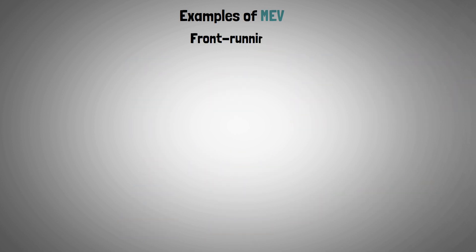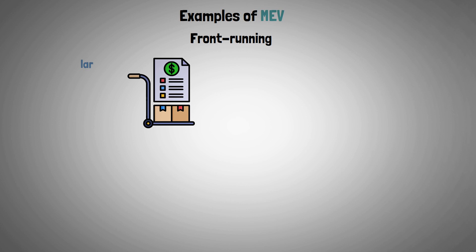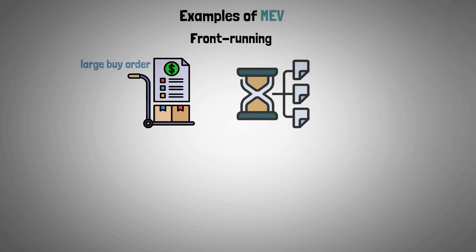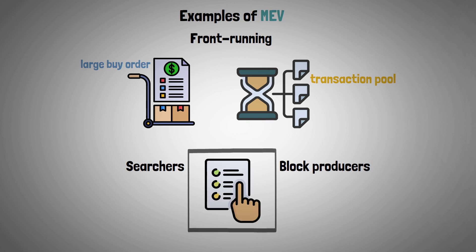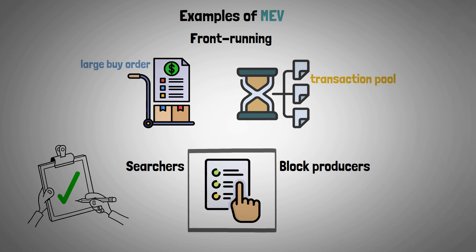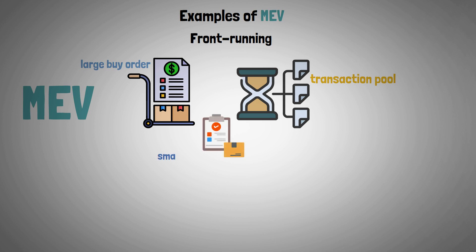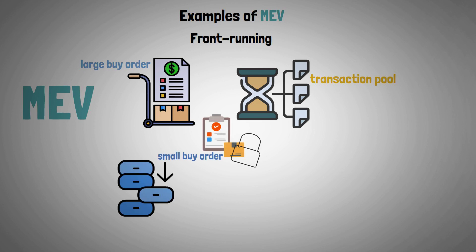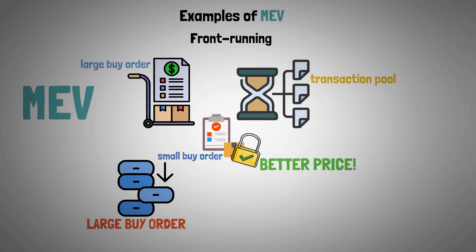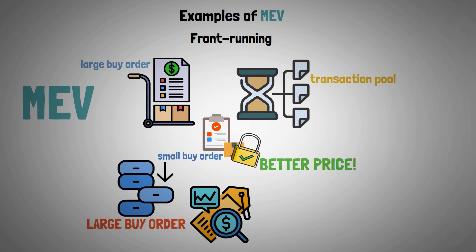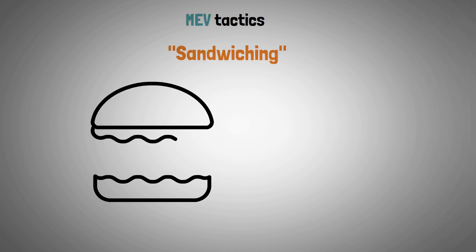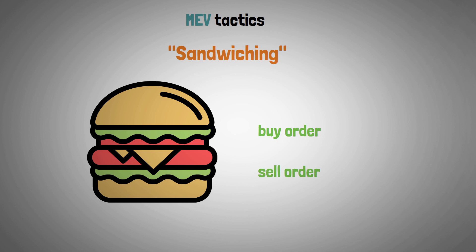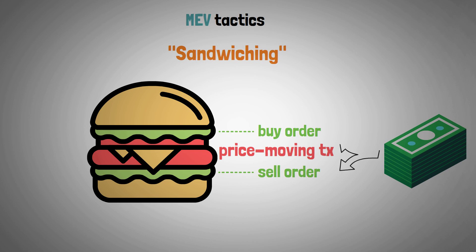Front running: let's say that there is a significant buy order still pending in the transaction pool. Searchers and block producers can order transactions in a block, meaning that front running is possible. MEV happens when a smaller buy order is inserted before the trade to lock in a better price before the larger buy order, which would raise the price of an asset. Similar MEV tactics include sandwiching, which entails placing buy and sell orders before and after a particular price-moving transaction to profit on the price pressure coming from both sides.